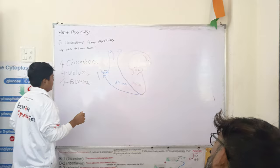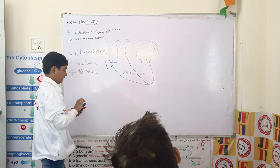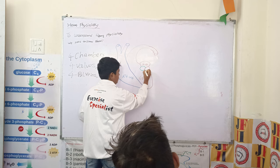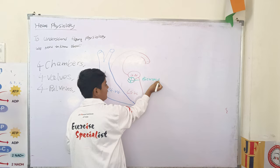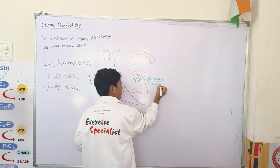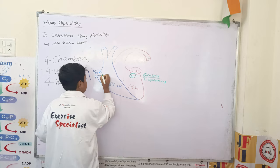The four valves of the heart are: first is the bicuspid valve, or you can call it the mitral valve, because it has two openings — one and two. Bicuspid means opening. The next is the tricuspid valve. Tricuspid means three, and cuspid means opening.